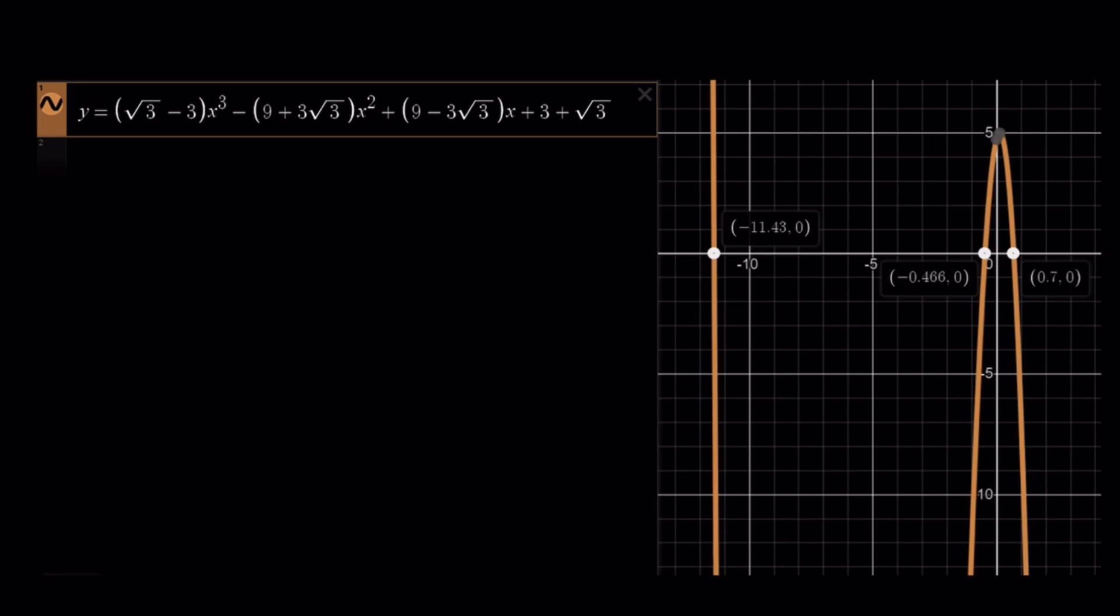And, this is a cubic equation which has 3 x-intercepts, and if you evaluate tangent 35, you're going to see that it's very, very close to 0.7. There's a couple zeros after the 7, and that is one of our x-intercepts.